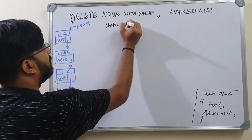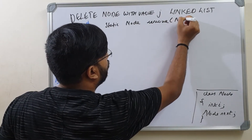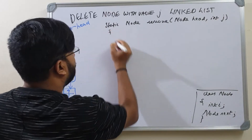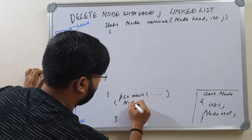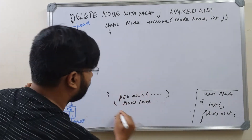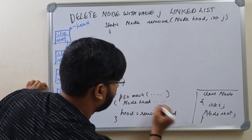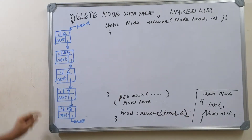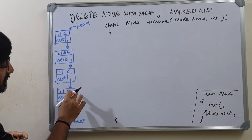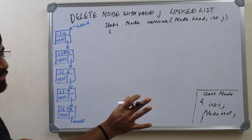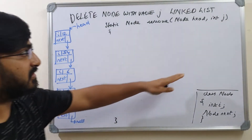Our method will be static node, because we'll be returning the updated head after removing the node if it is found. We call it remove, taking node head and int j. From main, you create the linked list with head and call head equals remove, passing the head and the value 6. This case will not handle multiple occurrences — if there were multiple 6s, we just remove the first one and return. Removing all instances would be a separate problem.